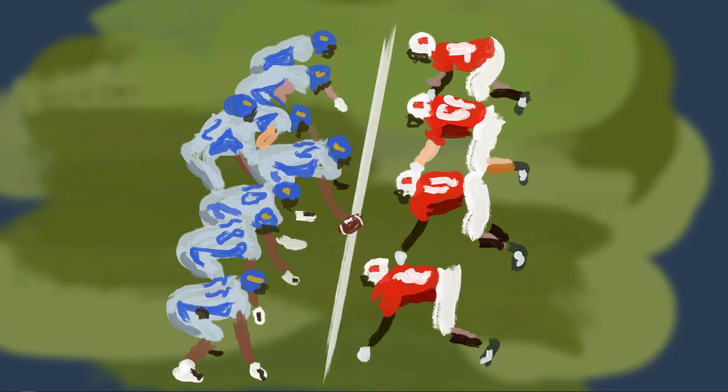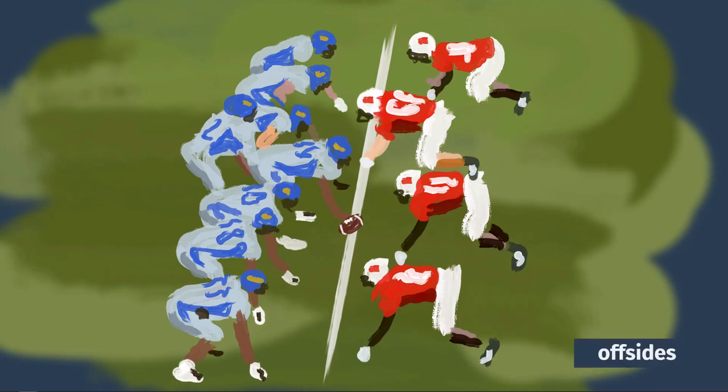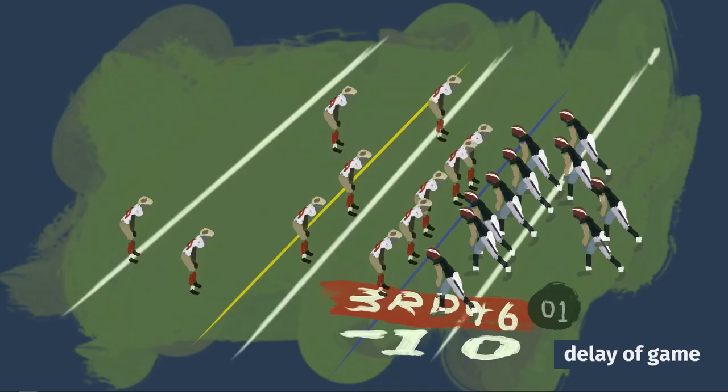Going offside can happen to either team — it means you are positioned on or past the line of scrimmage when the ball is snapped, also a five-yard penalty. Another pre-snap penalty is delay of game. If you're watching on TV, this is usually easy to spot because they'll show the play clock on screen. If the offense does not snap the ball when the clock hits zero, that's a five-yard penalty for delay of game.